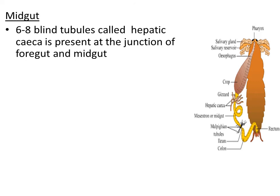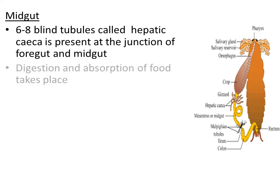The digestive juice secreted by hepatic caeca is released into the midgut region. The midgut is the main part of the alimentary canal where complete digestion and absorption of food takes place. Midgut is narrow and short compared to the hindgut in cockroach. Midgut is followed by hindgut.